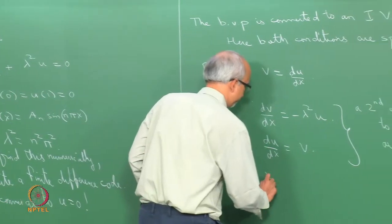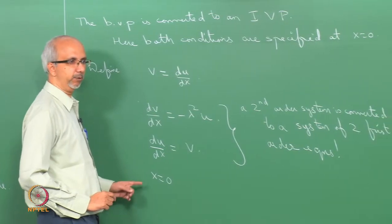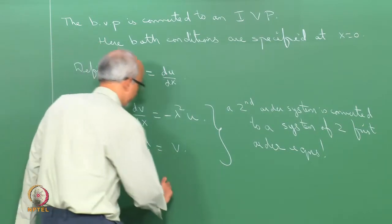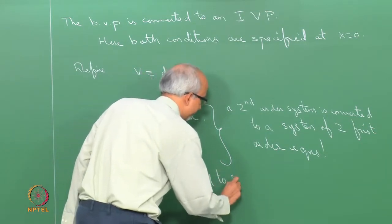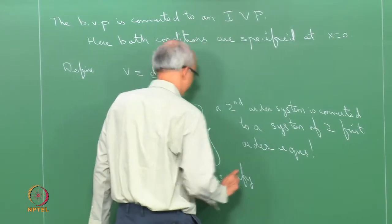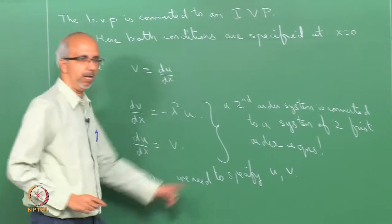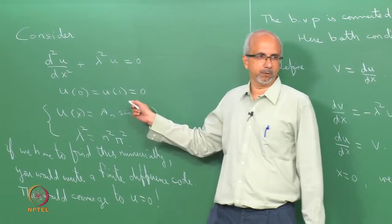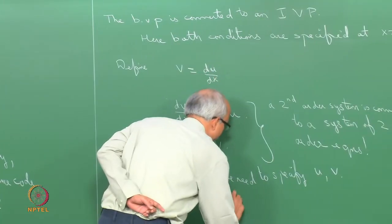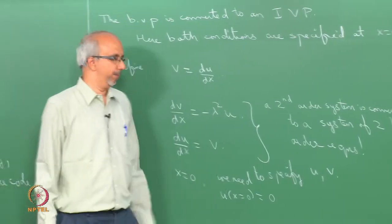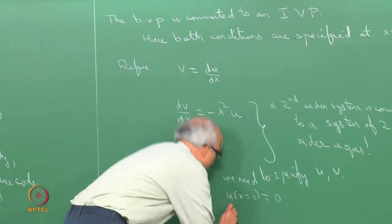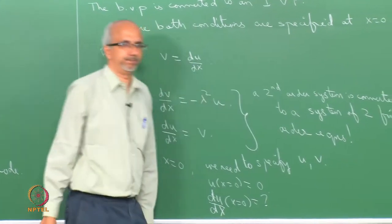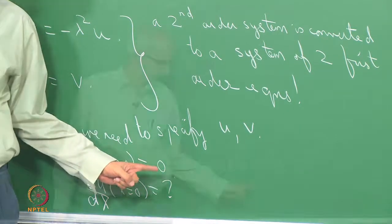At x = 0, we need to specify both u and v. The value of u at x = 0 is 0 — same as the original boundary condition. But we do not know v; that is, du/dx at x = 0 is unknown, so we must make a guess.